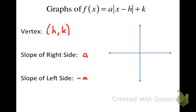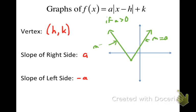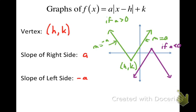For a general graph with A positive: the slope of the right side equals A, the slope of the left side equals negative A, and the coordinates of the vertex are H and K. If A is negative, the graph opens downward — the slope of the right side is still A and the slope of the left side is negative A, with the vertex still at H, K.